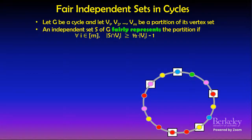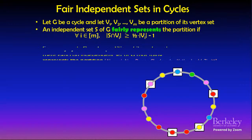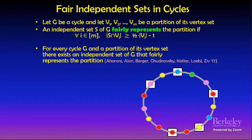More precisely, we say an independent set S of cycle G fairly represents the partition if for every i from 1 to M, the number of vertices of S belonging to V_i is at least half times the size of V_i minus 1. For example, consider a cycle on 15 vertices where yellow vertices are V_1, red are V_2, and so on — each color corresponds to a set V_i. The highlighted vertices form an independent set that fairly represents the partition: with five red vertices, our independent set includes two of them as required.